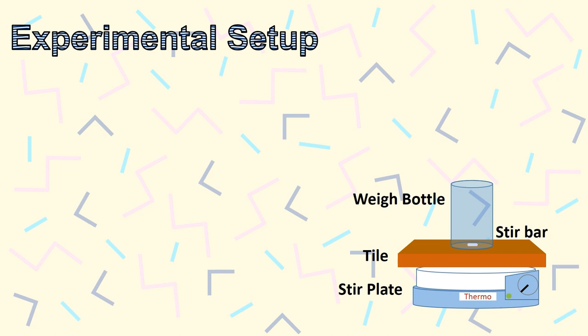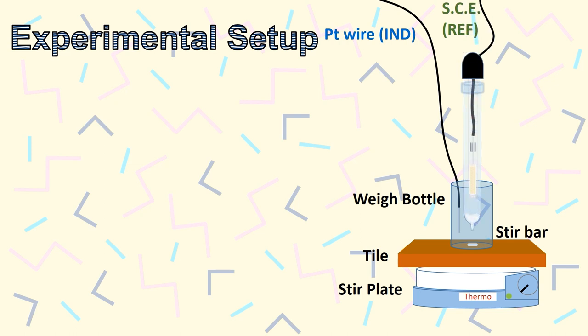Next is your stir bar, and then your platinum wire, the reference electrode, and the burette delivery tube. Make sure that none of these items touch each other.